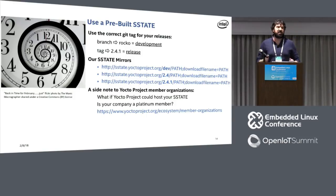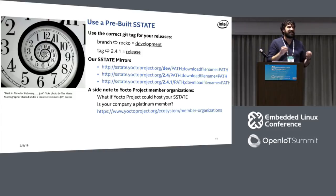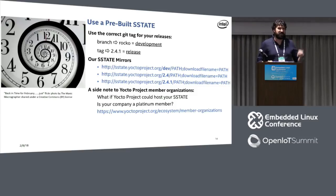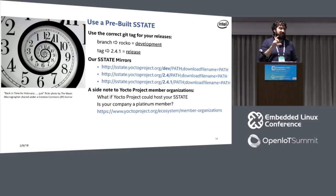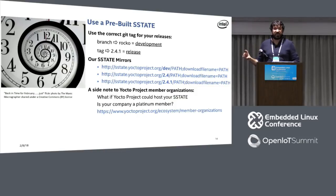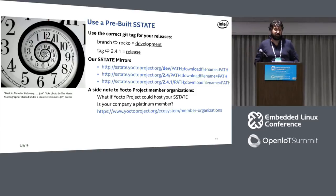Everyone thinks about S-State mirrors as something their team probably won't benefit from, but it is extremely useful. Last week I was talking to a documentation person on our team who was having problems with one of the builds building 2.4.1. I showed him the link, showed him how to set it up, and his build took about seven minutes because he was just pulling stuff we had already built on the auto builder. There was no reason to rebuild any of it. It looked at the SHAs, they were all correct, and it generated a root file system for him.